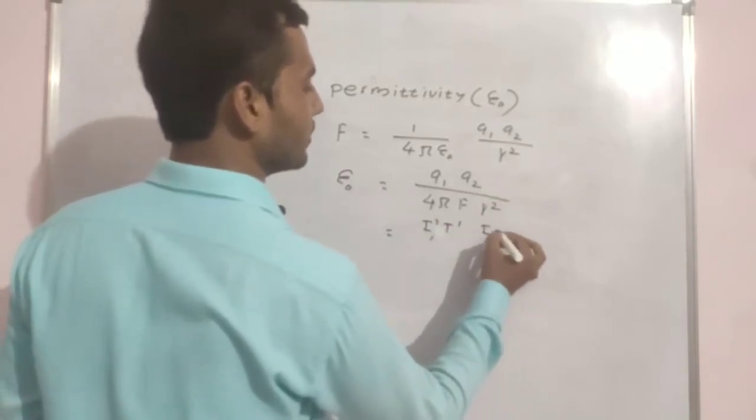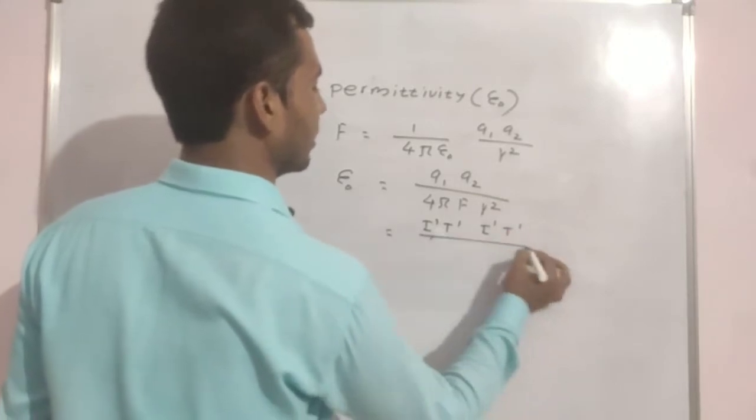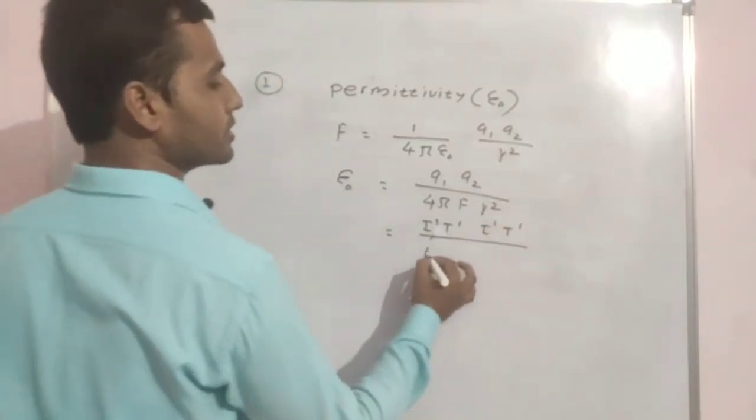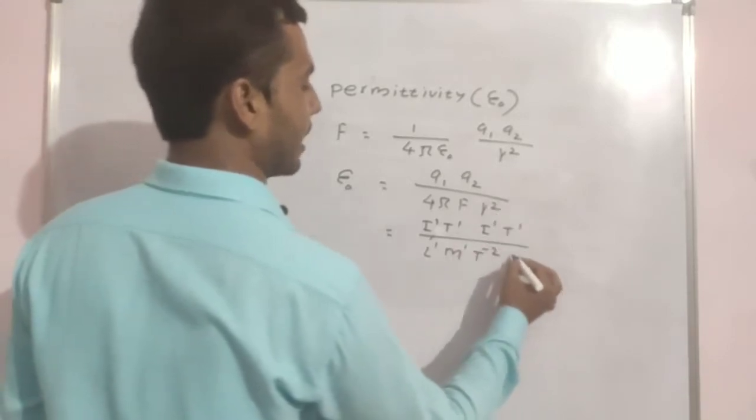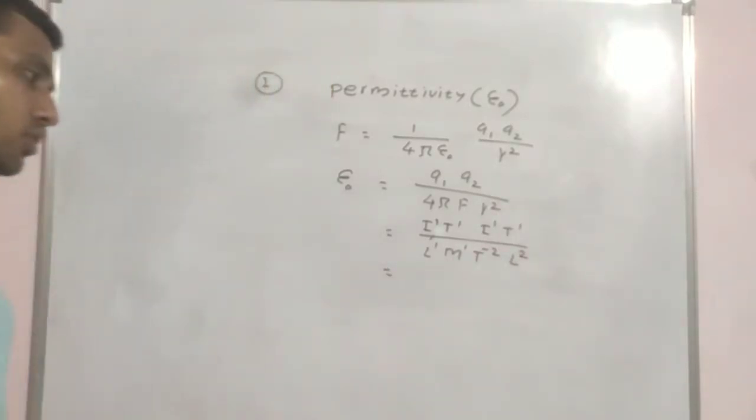For q2, we have i1, t1. For f the dimension is l1, m1, t minus 2 and r square is l2.